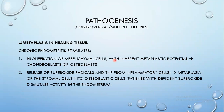Osseous endometrial metaplasia has multiple theories suggesting how it comes about — these are theories, not yet definitive evidence, and they are many and controversial. The most accepted theories include metaplasia in healing tissue and dystrophic calcification within retained ovular tissue. With metaplasia in healing tissue, remember that in most cases patients have a history of a previous pregnancy or sometimes an abortion.